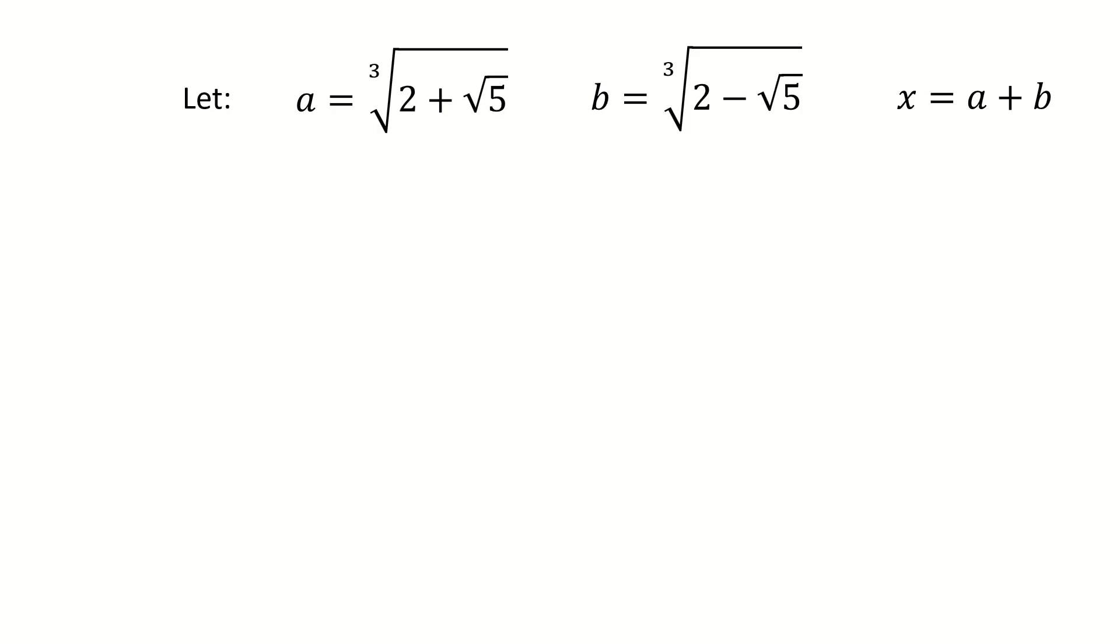Here we let a equals the cubic root of 2 plus square root 5, and b equals the cubic root of 2 minus square root 5, and x equals a plus b. So finally, we want to solve x.